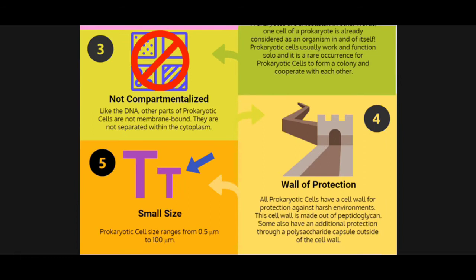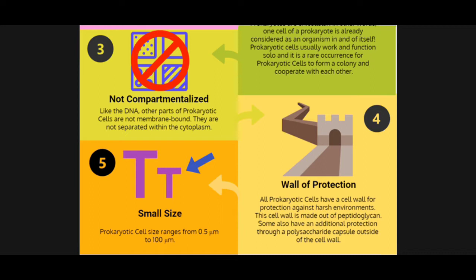Number three: prokaryotic cells are not compartmentalized. Just like their DNA, other parts of a prokaryotic cell are not membrane-bound. They are not separated within the cytoplasm, which means they can bump into each other because there is no boundary separating the different parts of the cell.